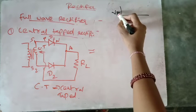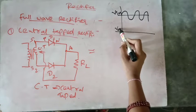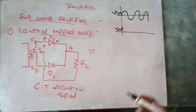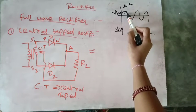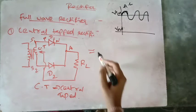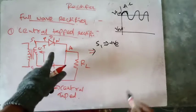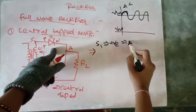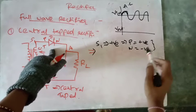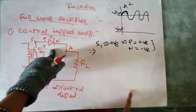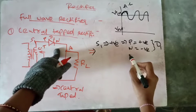For the given AC input voltage, what will be the output voltage? For the first half cycle, S1 will be positive. That means the P type will be positive and N type will be negative for diode D1. Since the positive terminal is connected to P type and negative to N type, diode D1 will be forward biased.